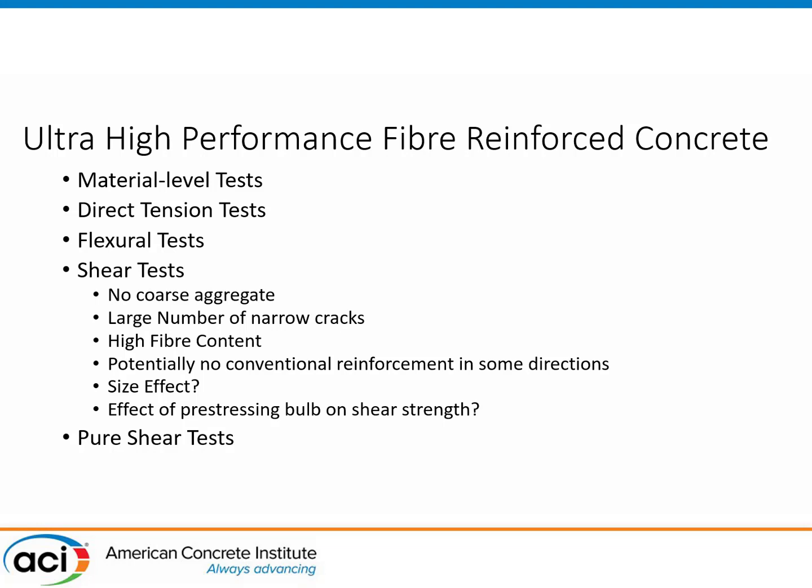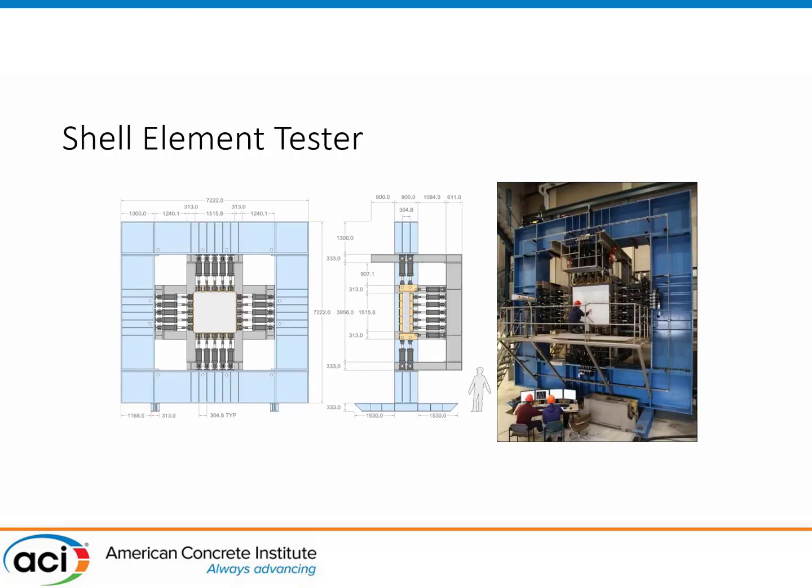A pure shear test is an experiment where you have no moments applied, only shear applied to the specimen. To do that, you need a special machine. What we use at the University of Toronto is our shell element tester. We've been using this for about 30 years. It's a large blue frame, as you can see.